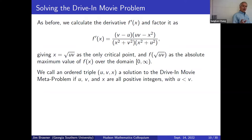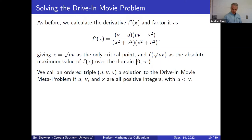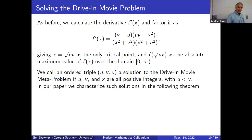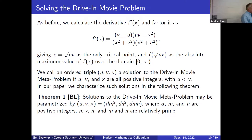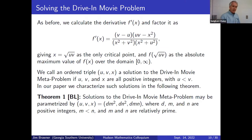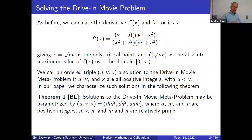We call a triple of integers (u, v, x) a solution to the drive-in movie meta-problem if u, v, and x are all integers and u < v, with x = √(uv). In our paper, Madhu and I characterized all such solutions. The answer is: the only way to get integer u, v, and x is if they have the form d·m², d·n², and d·mn, where d, m, n are positive integers with m < n and m, n relatively prime.